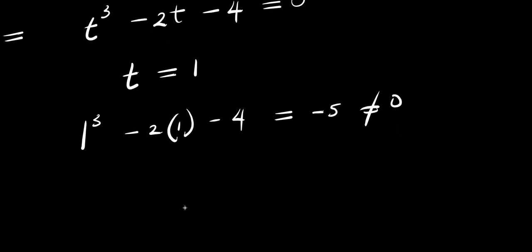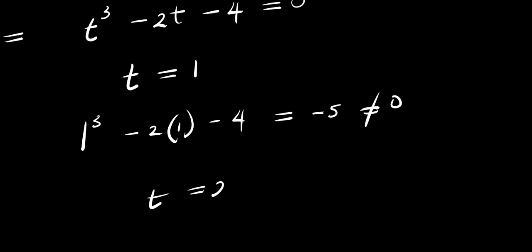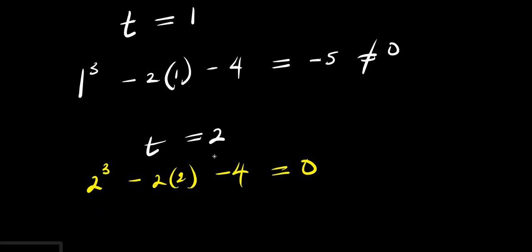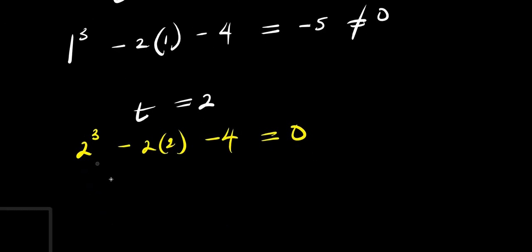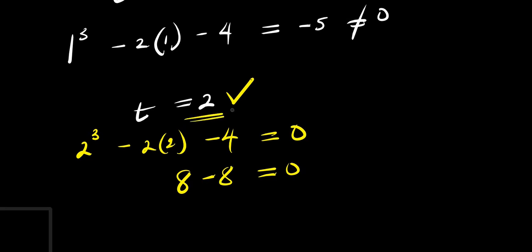Let's consider t equals 2: 2 cubed minus 2 times 2 minus 4. That is 8 minus 4 minus 4, which is 8 minus 8, and this gives us 0. So t equals 2 has satisfied the equation — this becomes one of the solutions.